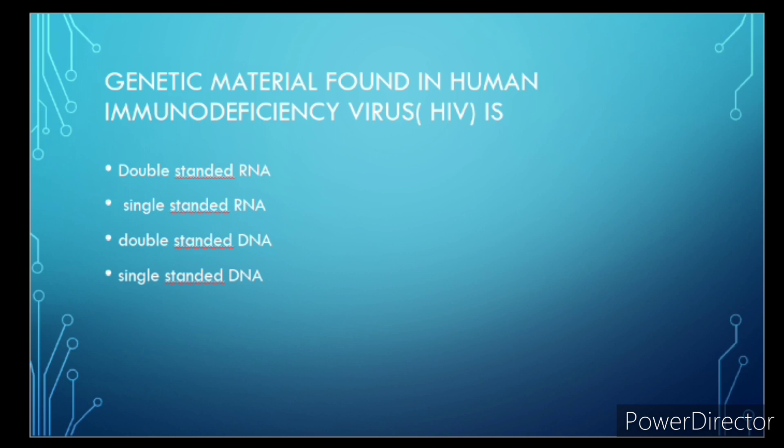Genetic material found in human immunodeficiency virus is? Correct answer is single stranded RNA, option number second.